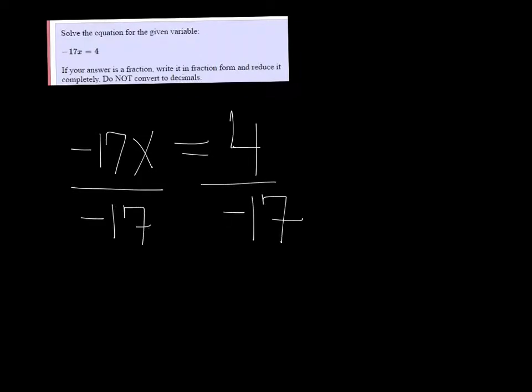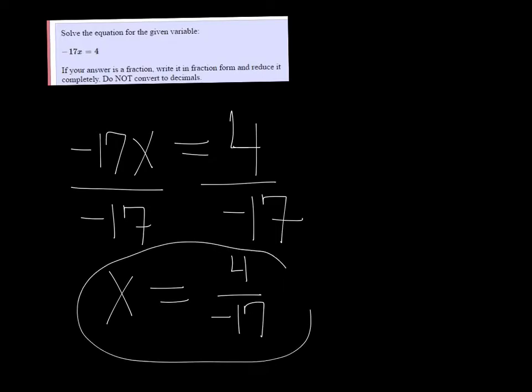I get that x is equal to 4 over negative 17. That's already reduced, so we're good to go. We don't want to change that to a decimal.